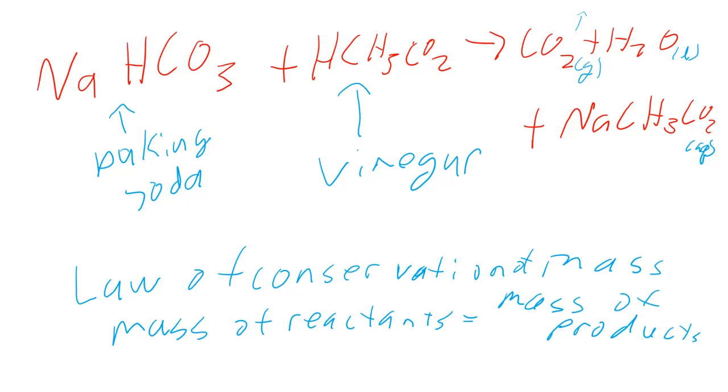You're going to get yourself 30 milliliters of vinegar in a beaker and record the mass. You're going to slowly add your baking soda to the vinegar until the solution is clear and you don't have any undissolved baking soda. You're going to do this three times because we want to show that our results are reproducible.